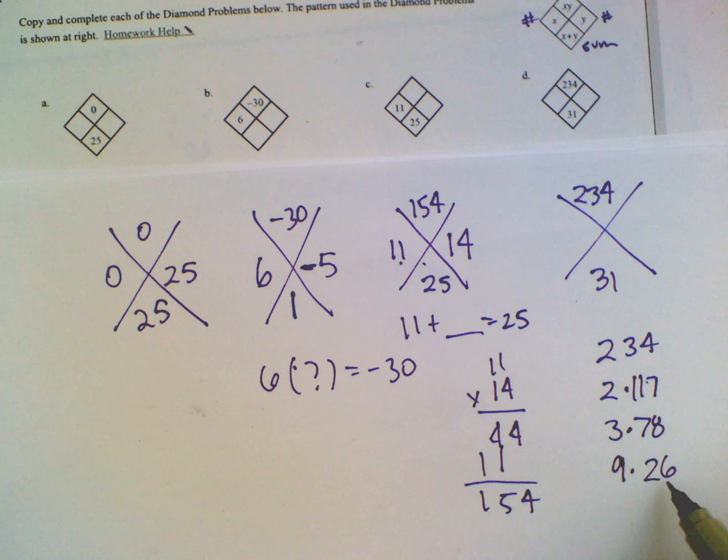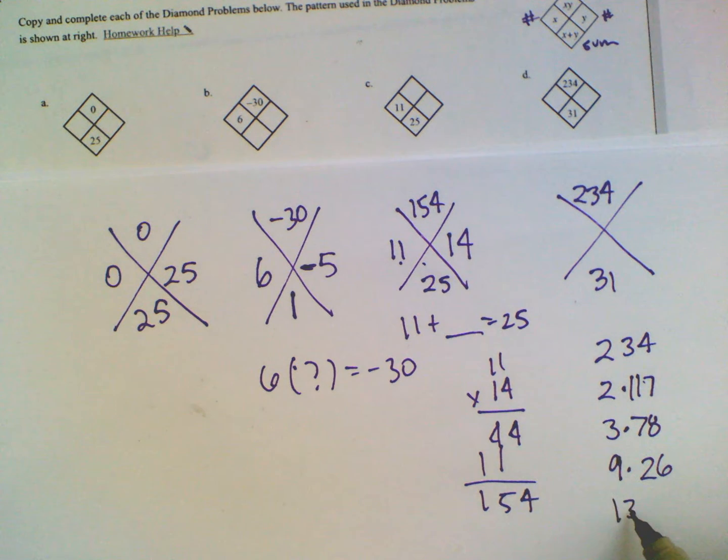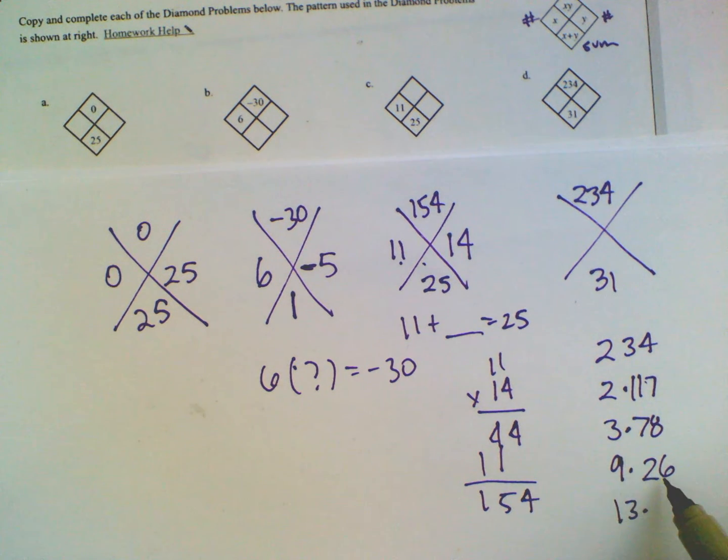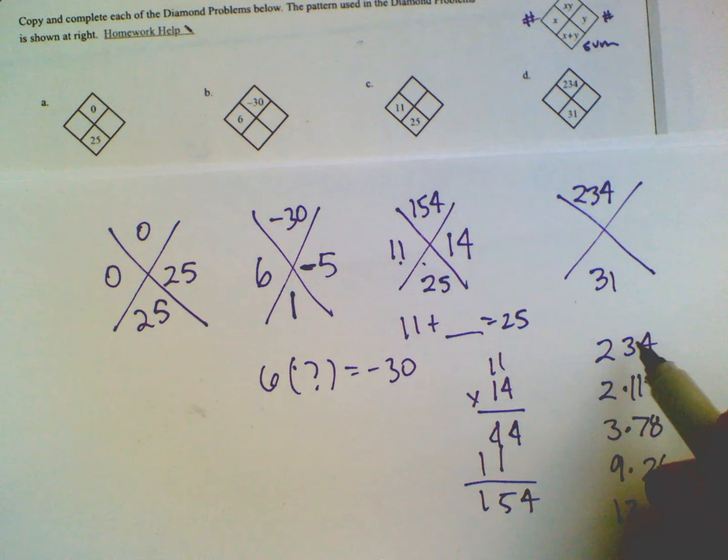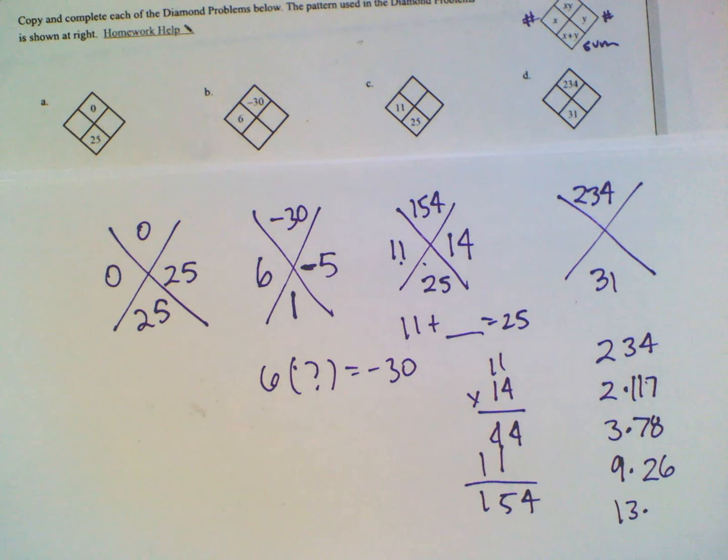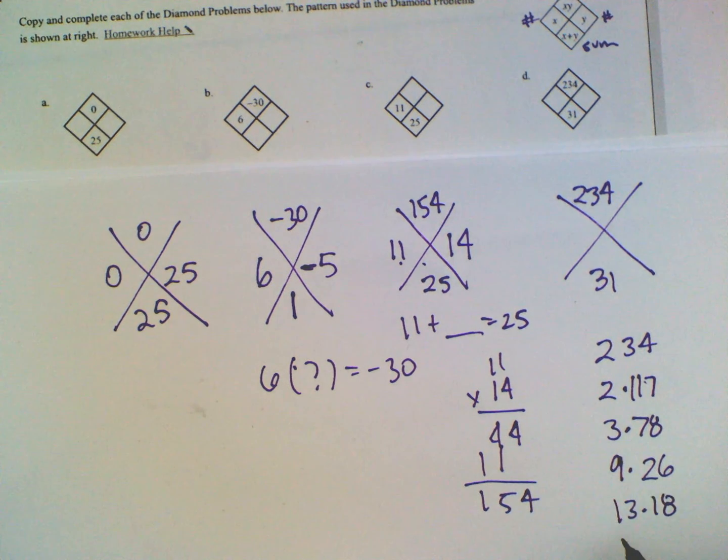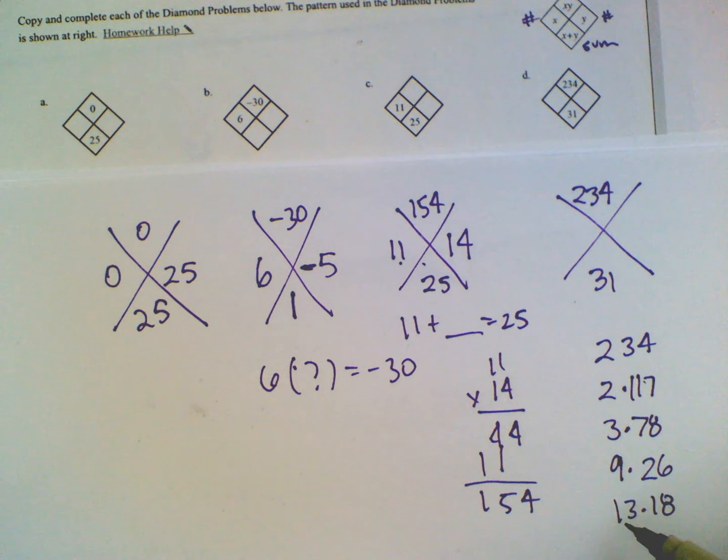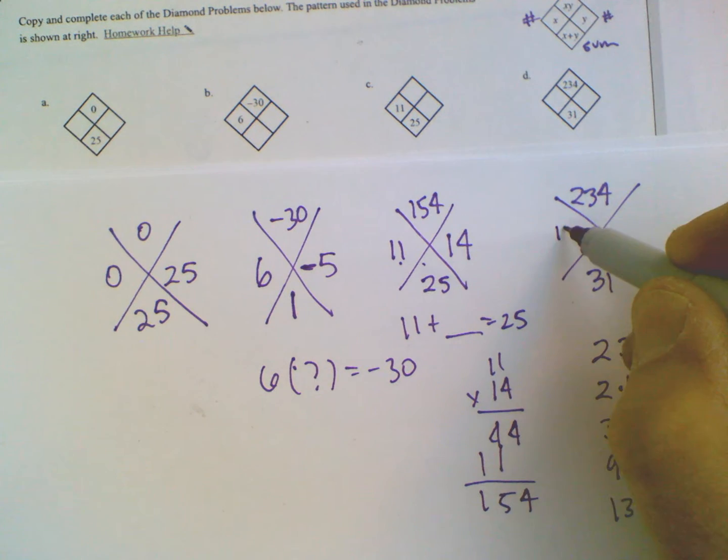So if 26 is divisible by 13, that would mean 234 is as well divisible by 13. So 234 divided by 13 is 18. So now I have 13 times 18 is 234. And sure enough, 13 plus 18 is 31. So there's my two numbers.